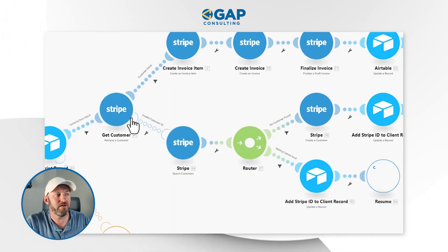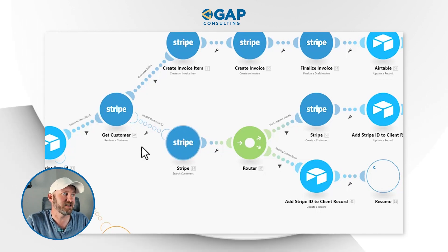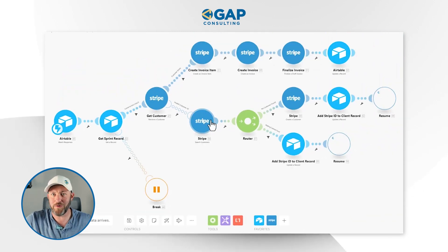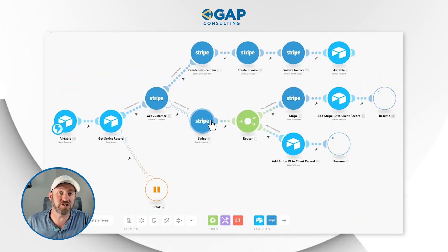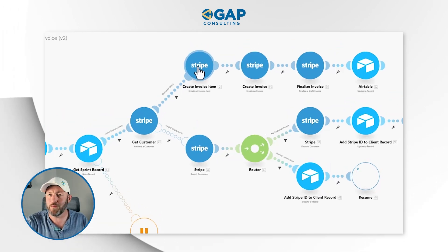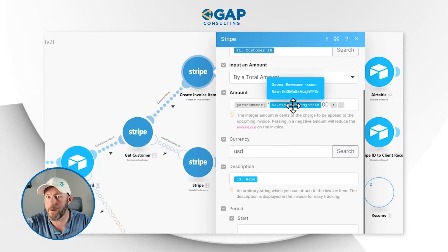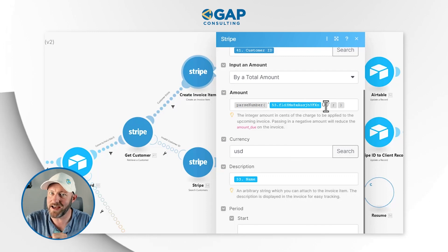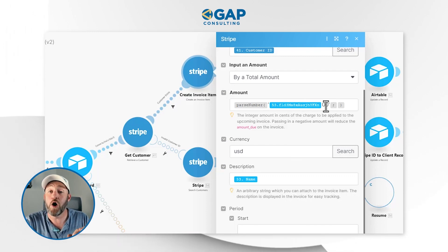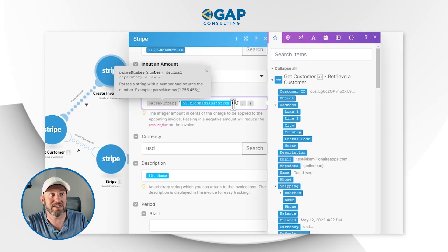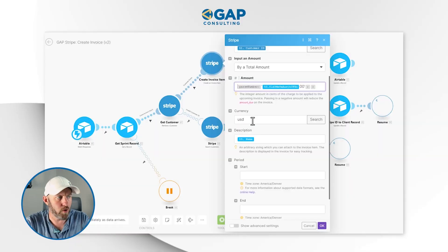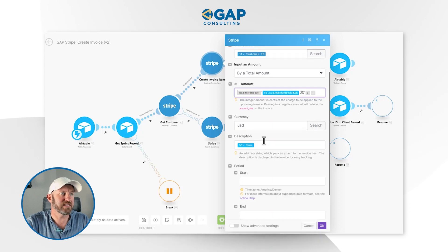Now we are at the point where we've created a customer or found a customer — one of those two things was true. So now we're ready to create the invoice item. We come in, bring in the information from Airtable and create the invoice item. Be sure to add two extra zeros here because Stripe always works in pennies and does not include decimals in the particular invoice. Also, be sure to label your currency based on your country of origin, and create that invoice item.